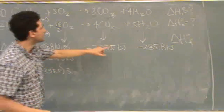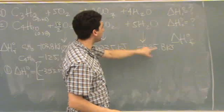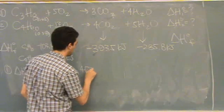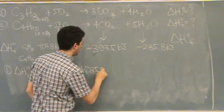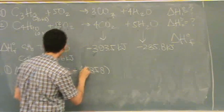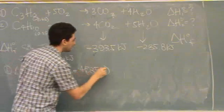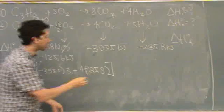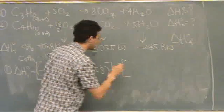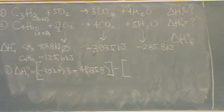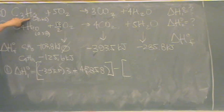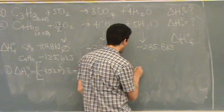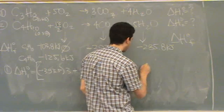And then, the other product is H2O. There's four of them, minus 285.8. And then, I'll remember to keep my minus signs in there. Okay. There's the product. Close the brackets. Products minus reactants. So, minus open bracket. Now, reactants, C3H8, that's minus 103.8.